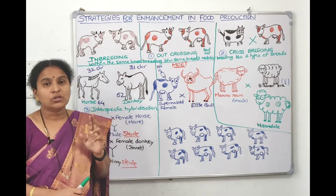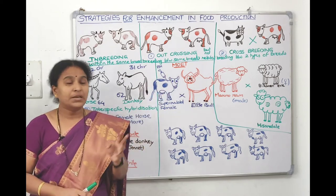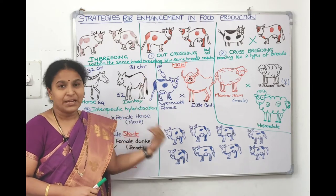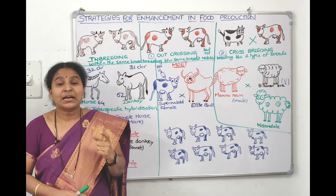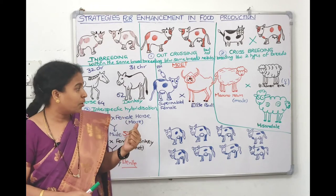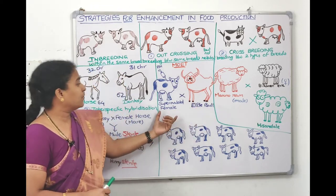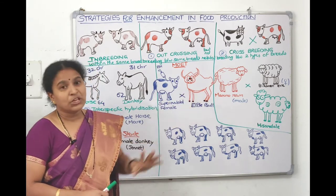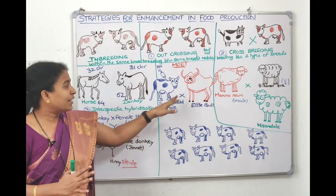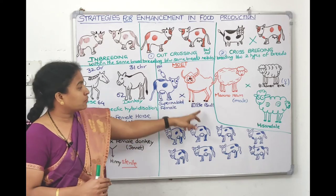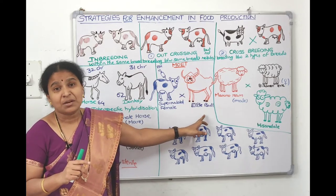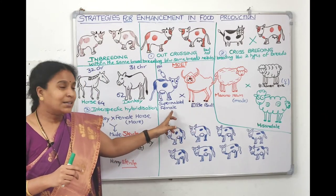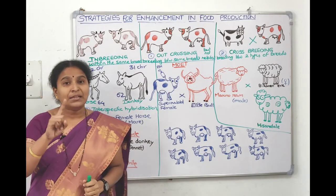MOET — multiple ovulation embryo transfer technology — comes under controlled breeding experiments. Here, one breed of elite bull is completely different from the normal female, so natural breeding is not possible. We collect sperms from the elite bull and use artificial insemination to send the semen into the uterus of the selected female. Animals have an oestrus cycle, not a menstrual cycle — cattle come into breeding once or twice a year.